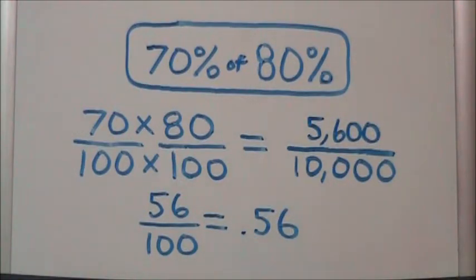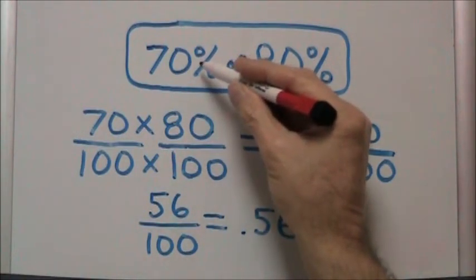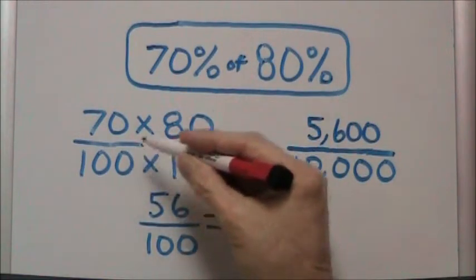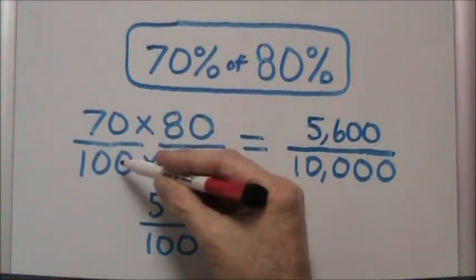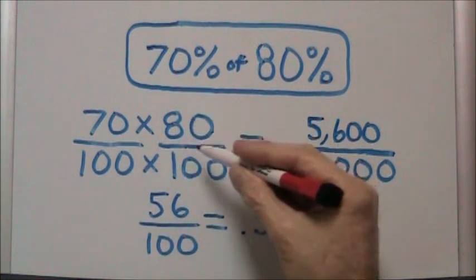We're going to use fraction form. Now, 70% is really 70 over 100. 80% is really 80 over 100. So we multiply 70 over 100 times 80 over 100.